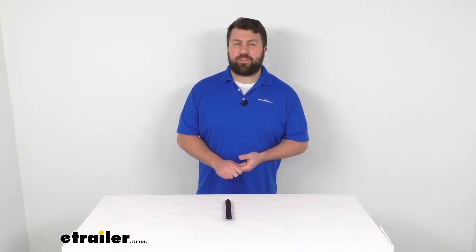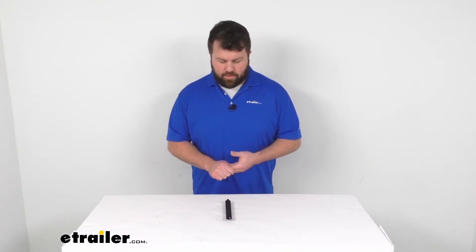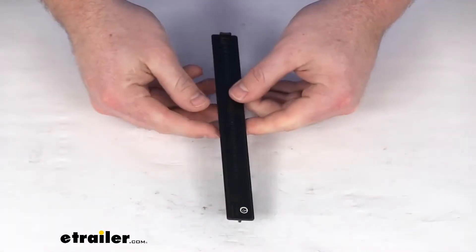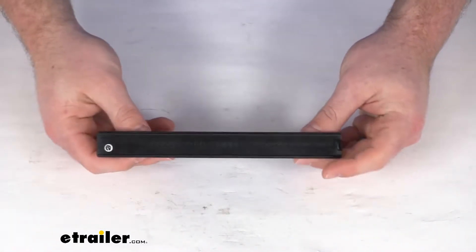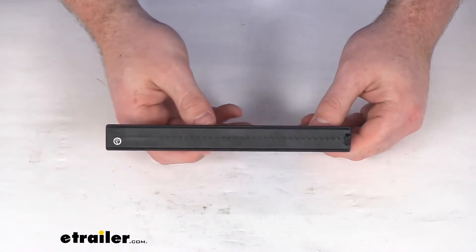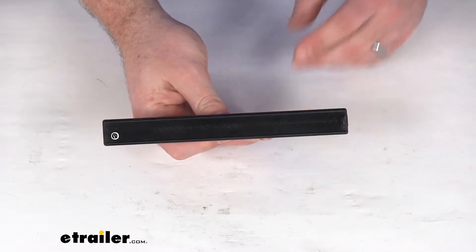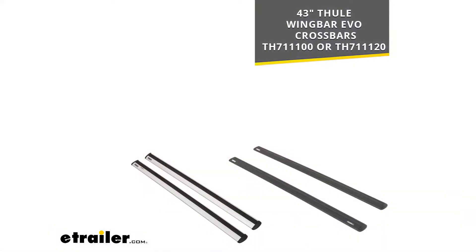Hi there, I'm Michael with eTrailer.com. Today we're going to take a quick look at the Thule replacement 1080 slide scale. This replaces the 1080 slide scale for your 43-inch Thule WingBar Evo crossbars.